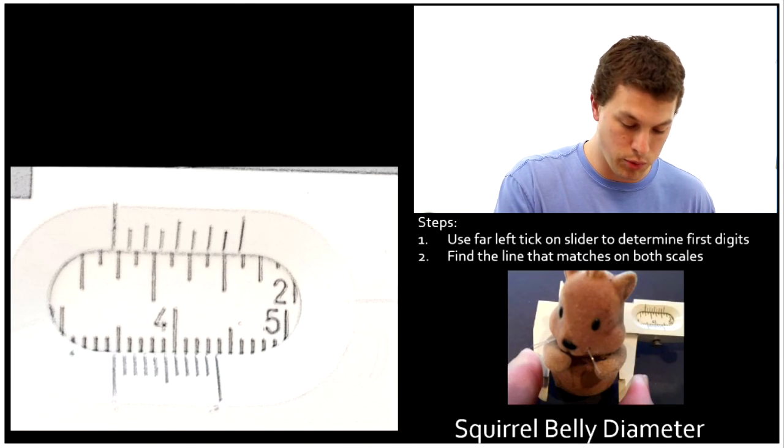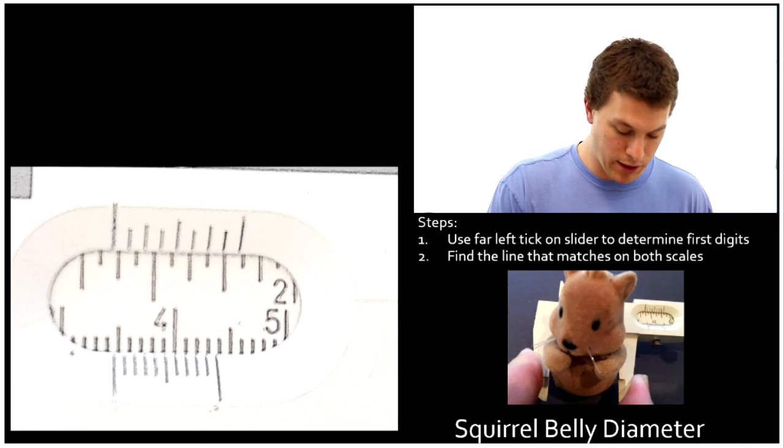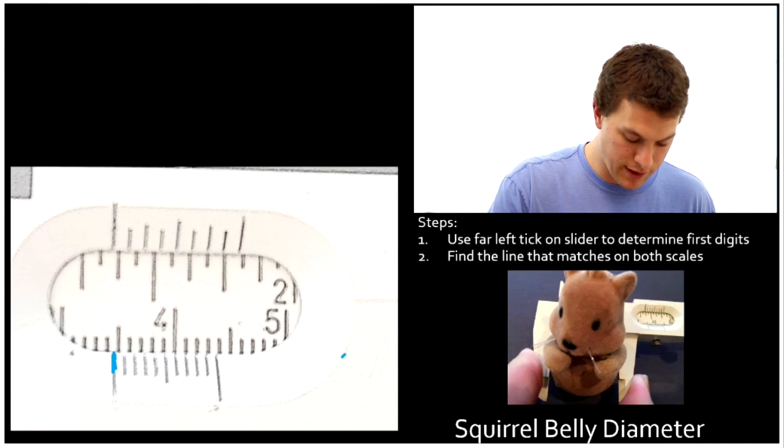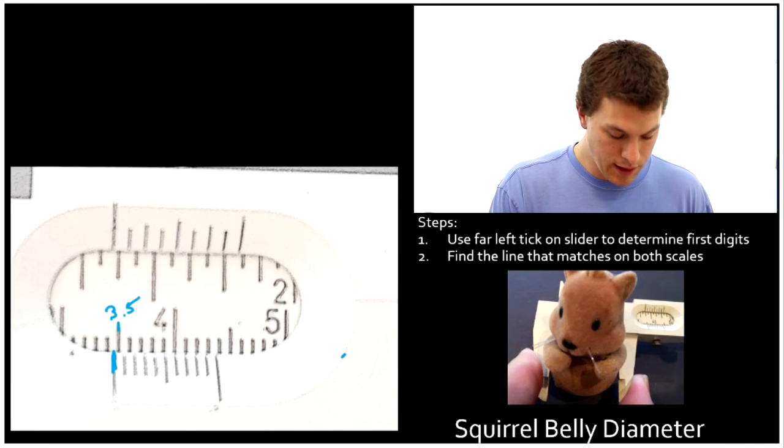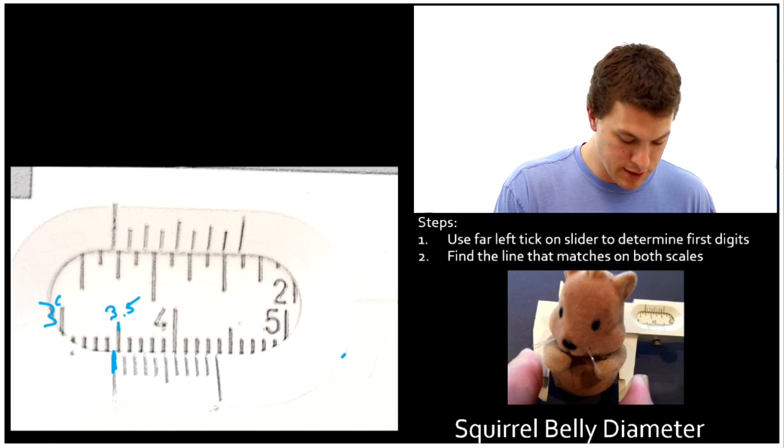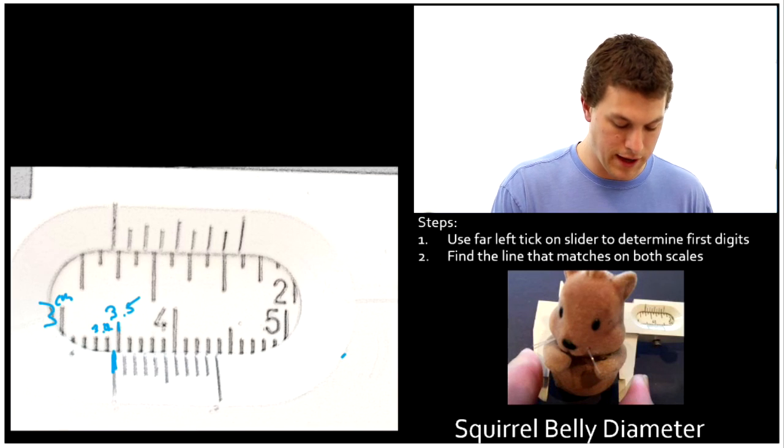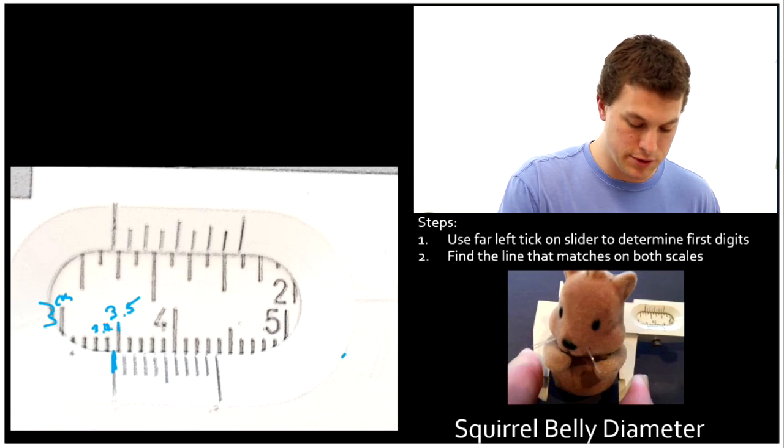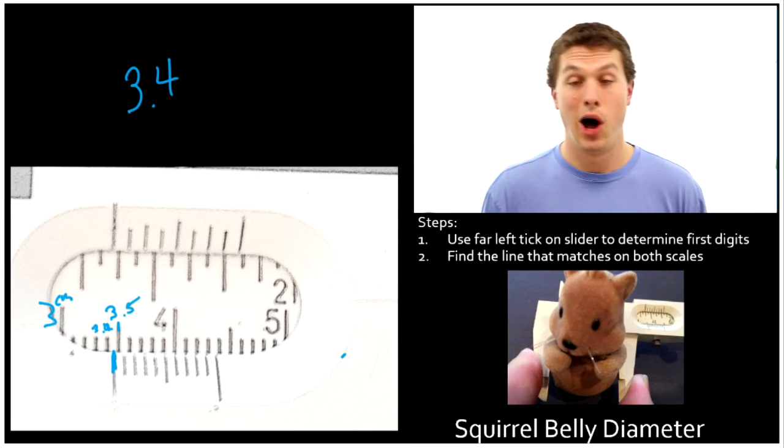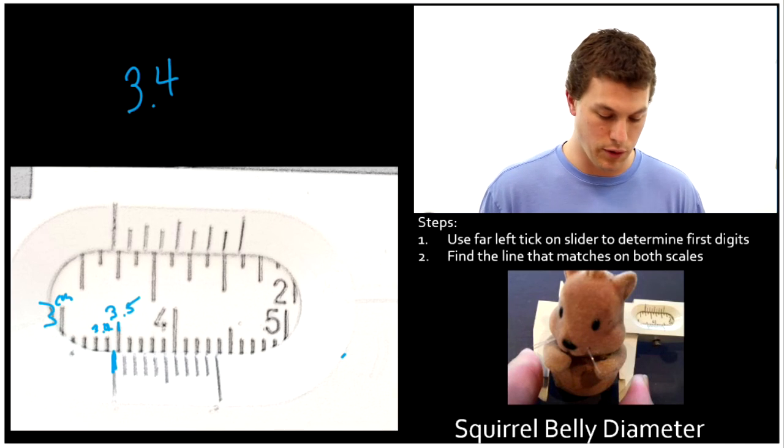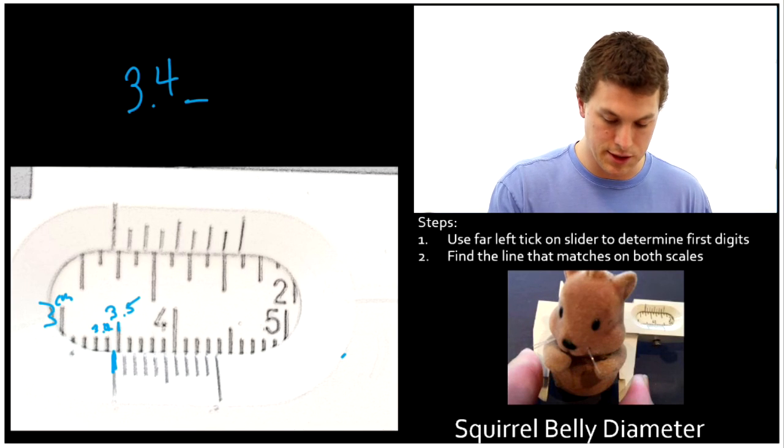Now we've got our squirrel belly, super important stuff here. Again, we're going to look at the leftmost tick and see where it lines up. That would be my 3.5 tick right here, this big guy. And I know that secretly 3 centimeters is hidden over here. So that's falling between 3.4 and 3.5. That means my first two digits are 3.4 because it's taller than 3.4, bigger than 3.4. And we need to figure out this last digit.